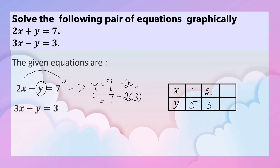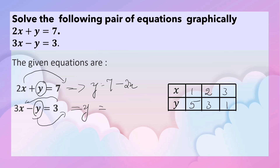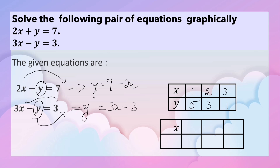When x is equal to 3, y is equal to 7 minus 6, that is 1. Now let us write the value of y in terms of x for the second equation. Moving terms, y is equal to 3x minus 3. Now let us make a table of values for x and y for this equation.